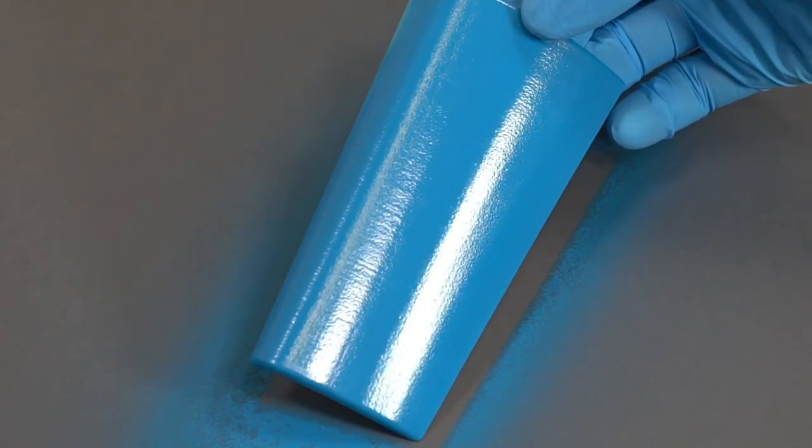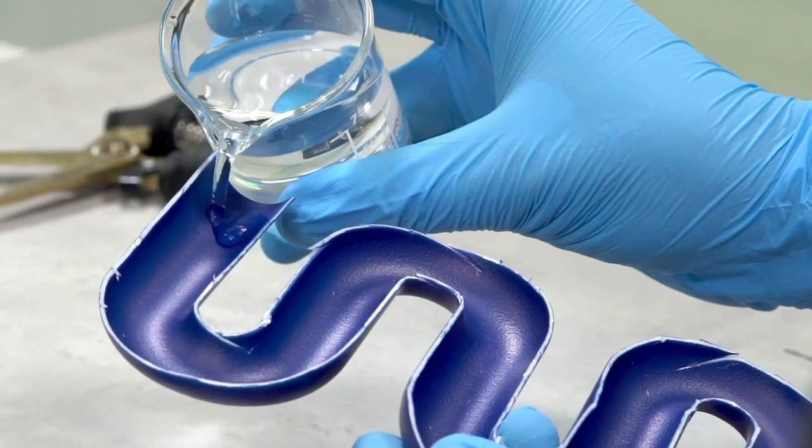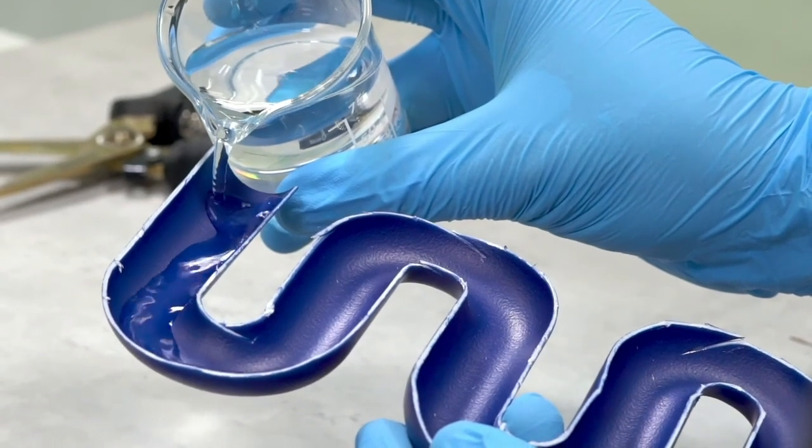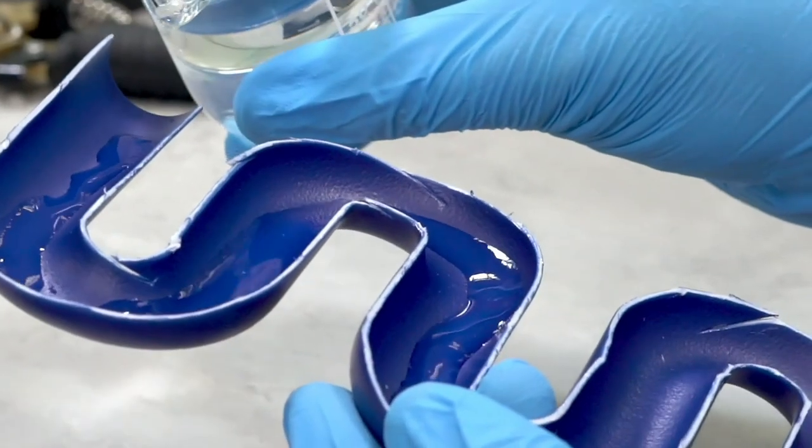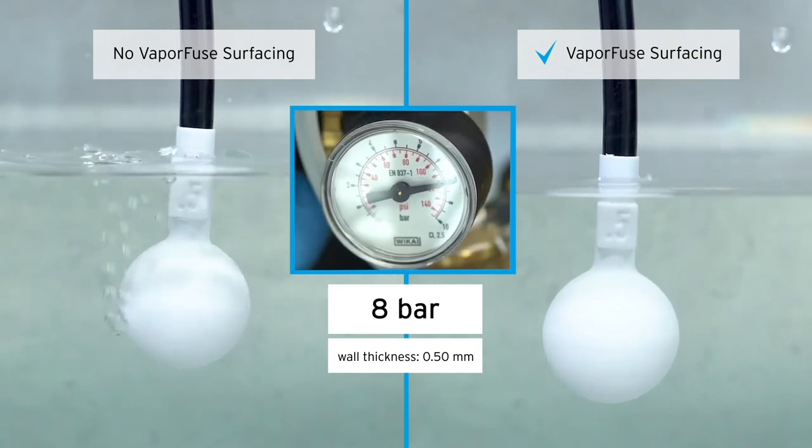Vapor Fuse surfacing delivers sealed and washable parts with injection molded-like surfaces. VFS works for all common plastics and particularly for flexible materials such as TPU for which mechanical techniques are not suitable.